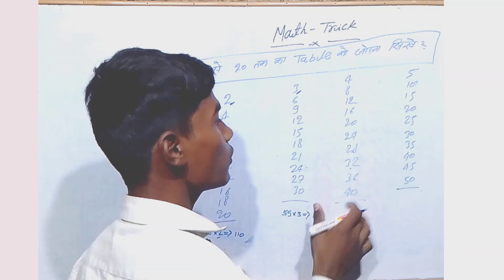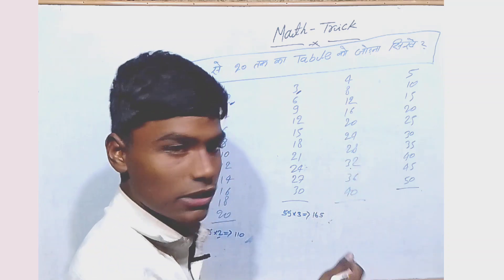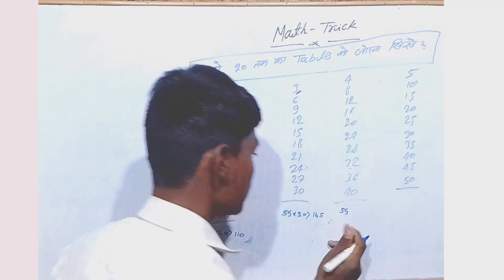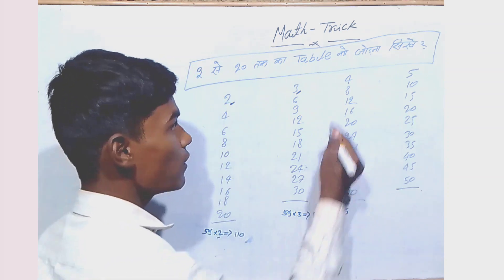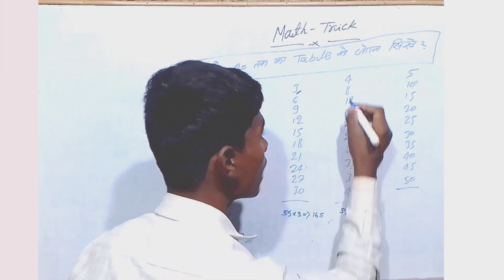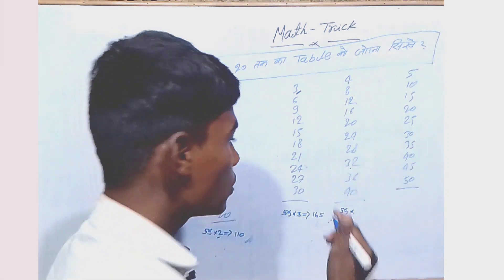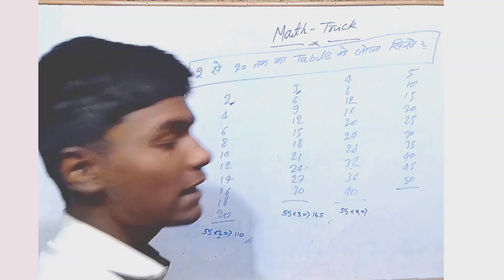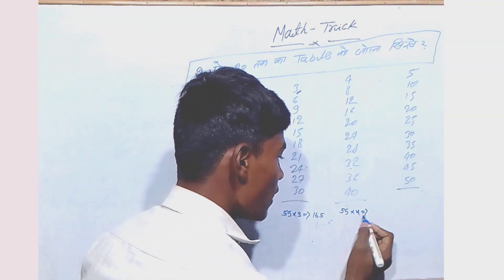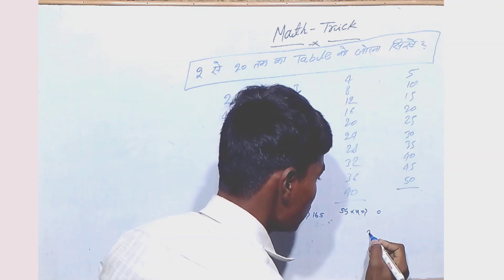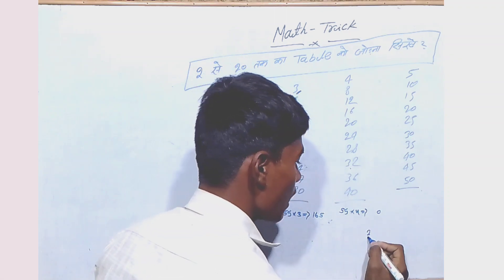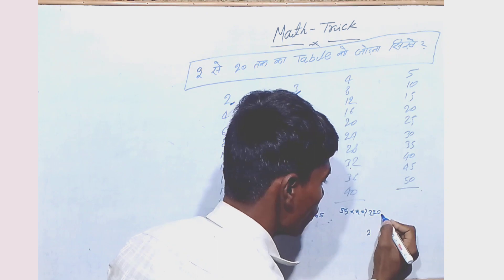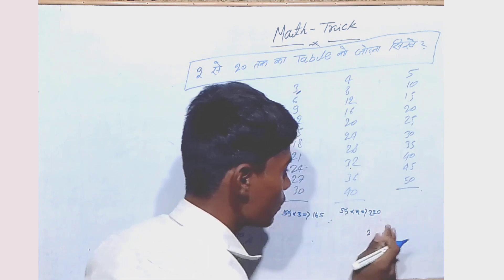And after that, just I am going to help you understand — the table of 4. How will you add it? Then again you will write here 155, and the table which you have to add, you will write it here. 5 times 4 is 20, carry 2. 5 times 4 is 20 and carry 2, you will add it — then 22. So the answer has come.